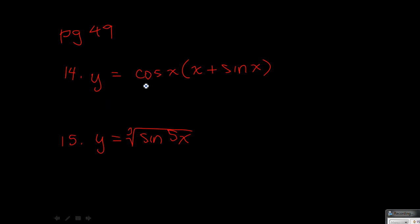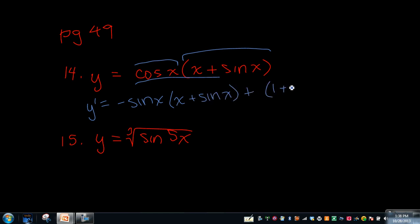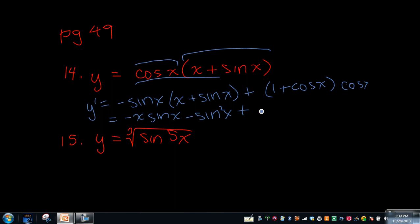On number 14, again we're using the product rule because we have these two parts being multiplied. So I'm going to take the derivative of the first guy, which is negative sine x, and keep the second guy the same. Then take the second guy's derivative and keep the first guy the same. We have negative x sine x minus sine squared x plus cosine x plus cosine squared x. It doesn't really simplify to anything because it's cosine squared minus sine squared, not plus, so you can't do anything with it.